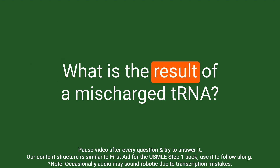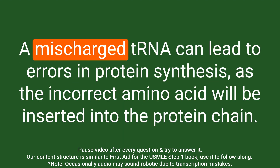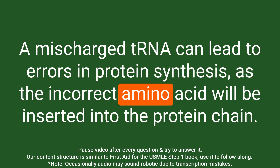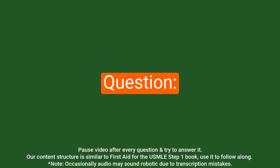Question: What is the result of a mischarged tRNA? Answer: A mischarged tRNA can lead to errors in protein synthesis, as the incorrect amino acid will be inserted into the protein chain.